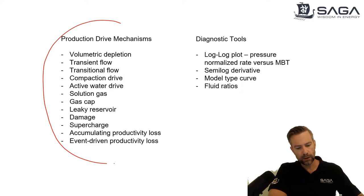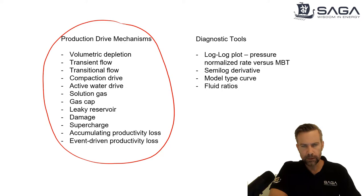What I've tried to do here is make a list of what I think are some of the more common production drive mechanisms. For most of the past 10 to 15 years, I've really been focused very much on horizontal multi-frack wells, which are really transitional flow and transient flow. But I've widened this list to include a lot more conventional applications as well. So really, this list would apply to almost any reservoir anywhere in the world.